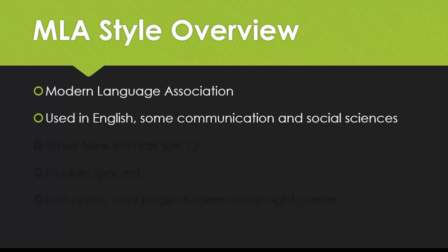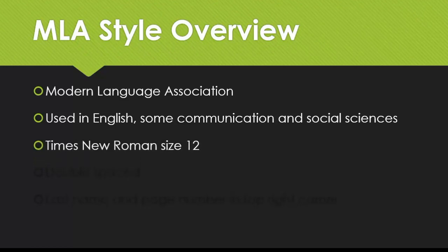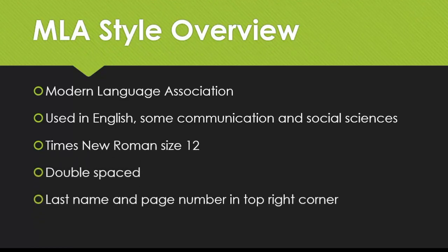It's fairly simple to set up an MLA paper. Your entire paper will be in Times New Roman, size 12 font, and double-spaced. Your last name and a page number will appear in the top right of the header of each page. Make sure those headers are also in Times New Roman, size 12.